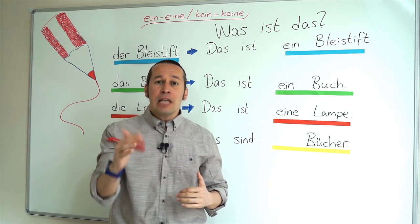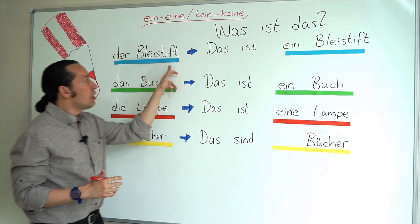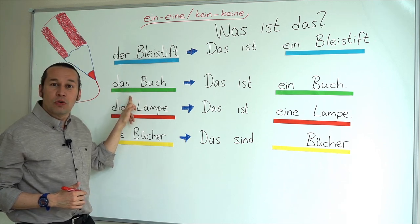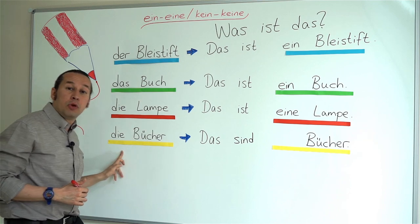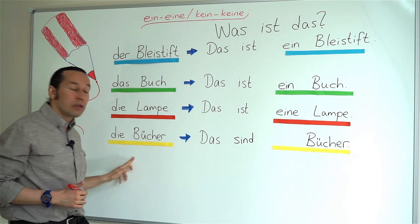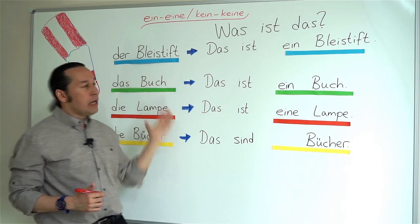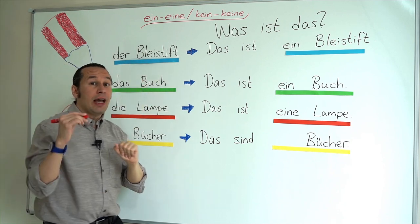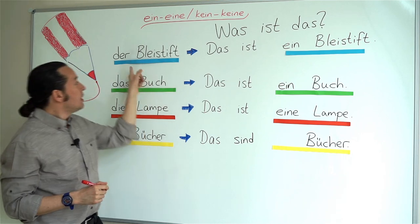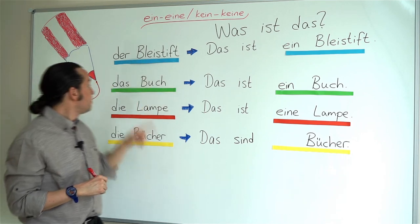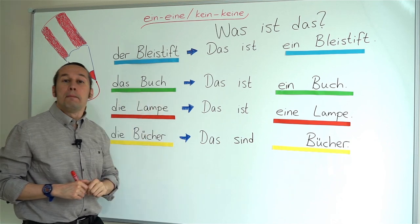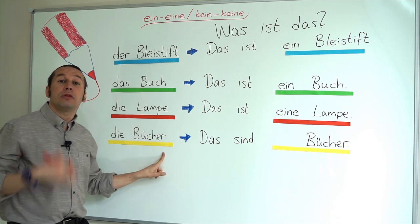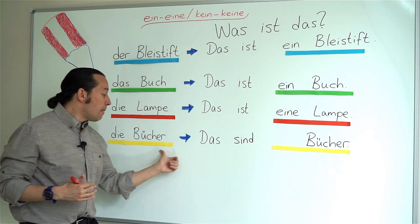As we had before, the blue color stands for 'der', the green color stands for 'das', the red color stands for 'die', and the plural form is colored yellow. In the articles video we had: der Bleistift — pencil, das Buch — book, die Lampe — lamp, and die Bücher — the plural form of books.